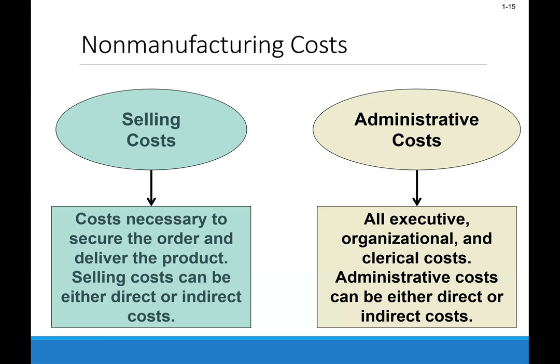Let's start with a question: which of the following costs would be considered a period rather than a product cost in a manufacturing company? There are two of them. The correct answer is B and E — property taxes on corporate headquarters and sales commissions.